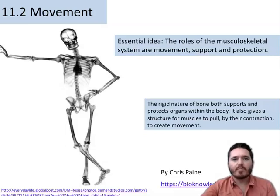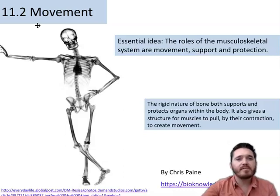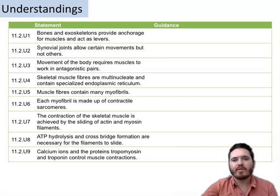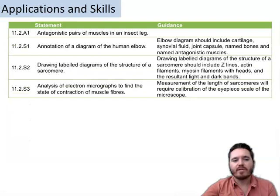Hello everybody, this is Mr. Burke and I'm going to be doing an overview of the additional higher level IB biology topic 11.2 movement. The essential idea here is that the roles of the musculoskeletal system are movement, support, and protection. The understandings can be found on this slide, the applications and skills can be found on this slide. Note that there's some important guidance here that you should be reading to get a better understanding of what exactly you're supposed to know for each of these statements.